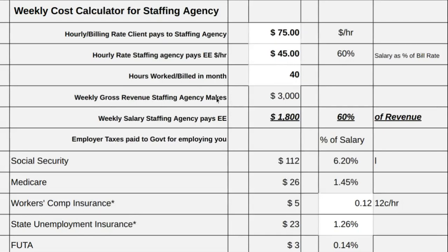The next section talks about your weekly gross revenue the staffing agency makes. Just like with your personal pay, gross is before any deductions are made — so this is before you pay your employees. In this case, $75 times 40 hours (bill rate times hours worked) equals $3,000 a week. Then you deduct what you pay your employees: $45 times 40 hours.